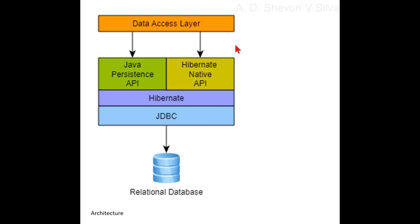Here you can see the data access layer is connected to the Java Persistence API and the Hibernate Native API. The Java Persistence API and Hibernate Native API are connected to Hibernate, which in turn interacts with JDBC, and JDBC is connected to the relational database.